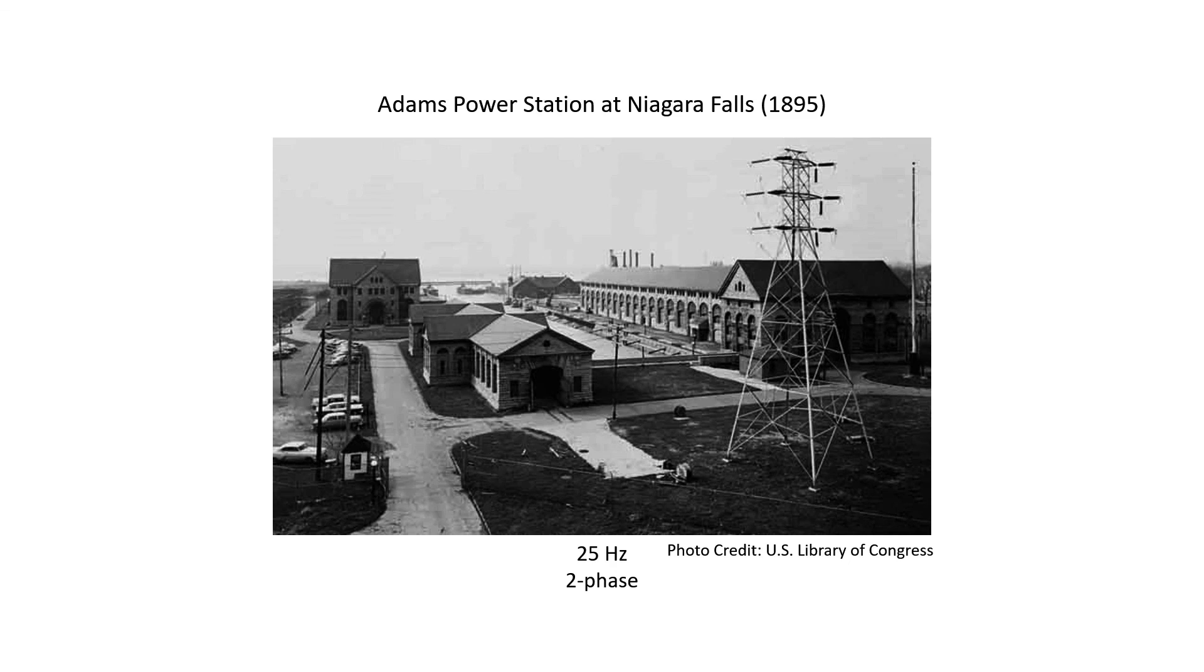Although three phase turns out to be even better than this, which I'll describe in the next video, two phase power distributions have actually gone into operation before. This is a photo taken of the Adams power station at Niagara Falls. This particular power generation facility delivered two phase power at 25 Hz. Two phase power, where the two phases are 90 degrees apart from one another, is obsolete.